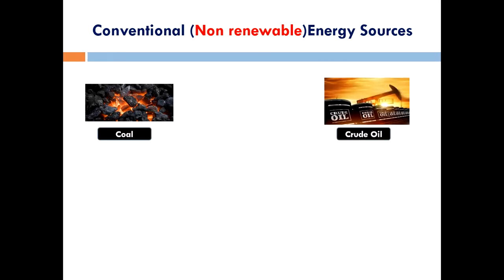The next conventional source is crude oil, also called petroleum. This fossil fuel is formed by the decomposition of organic matter under very high temperature and pressure. When organisms died, they settled to the bottom of the ocean, and over millions of years heat and pressure caused them to change into oil. Crude petroleum is obtained by drilling into the earth's crust and various components are extracted by fractional distillation. The main components are petrol, diesel, naphtha, kerosene, lubricant oil, and paraffin wax.